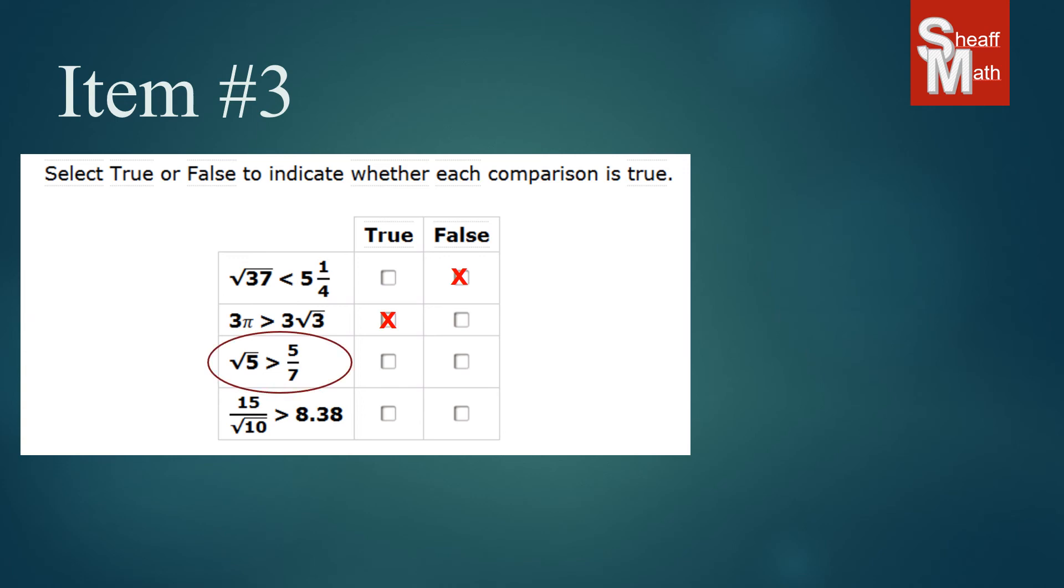Now we're going to look at the third one. We'll look at that square root 5, and that's between square root 4 and square root 9, which would be between 2 and 3. And it's closer to 4, so I'm guessing it's going to be about 2.2 or thereabouts. And if you replace the square root of 5 with 2.2, you can see that is larger than 5/7, which is less than 1. So that is a true statement—it is greater than 5/7.